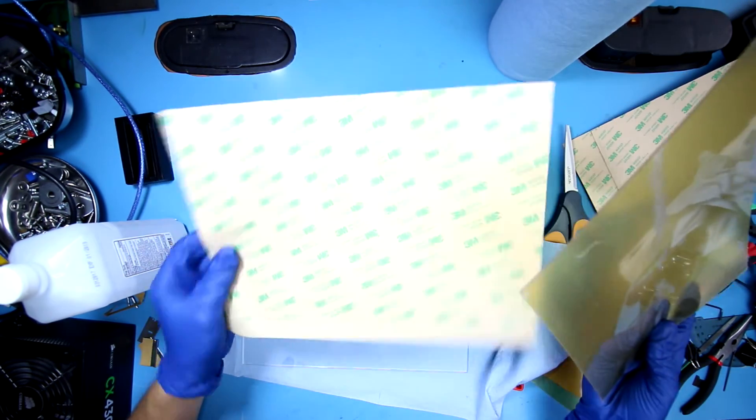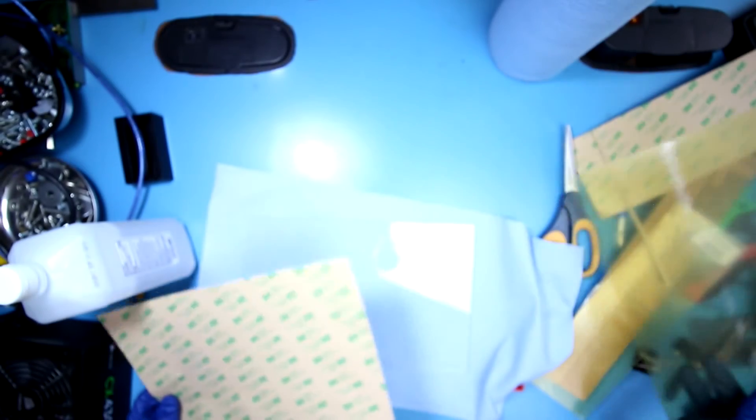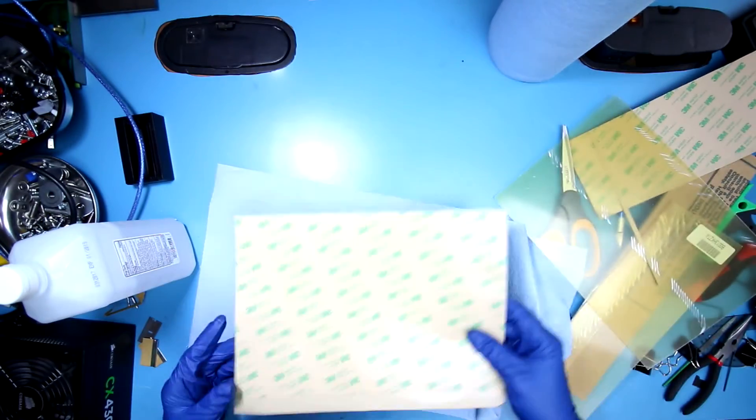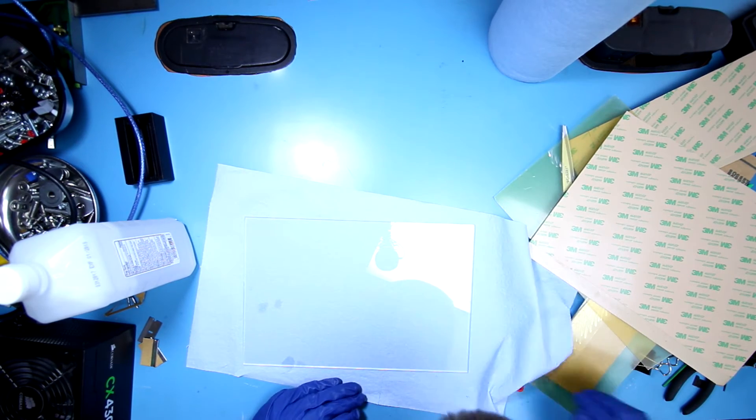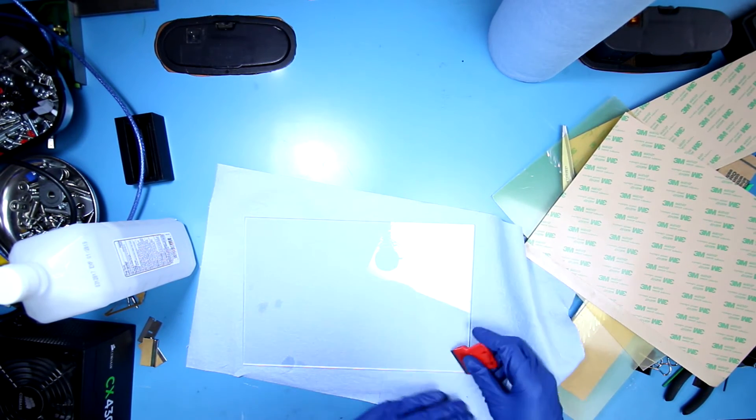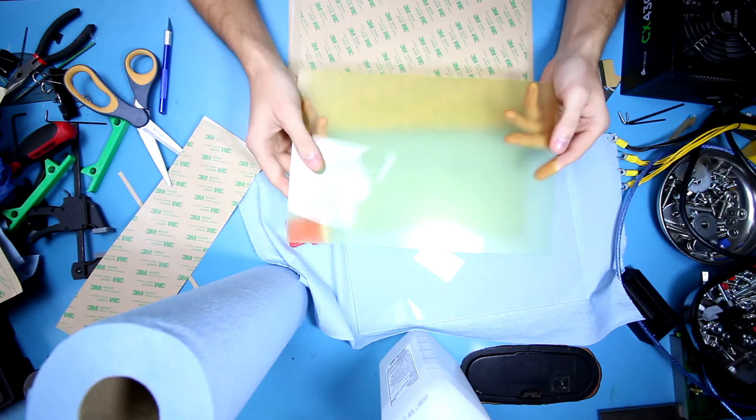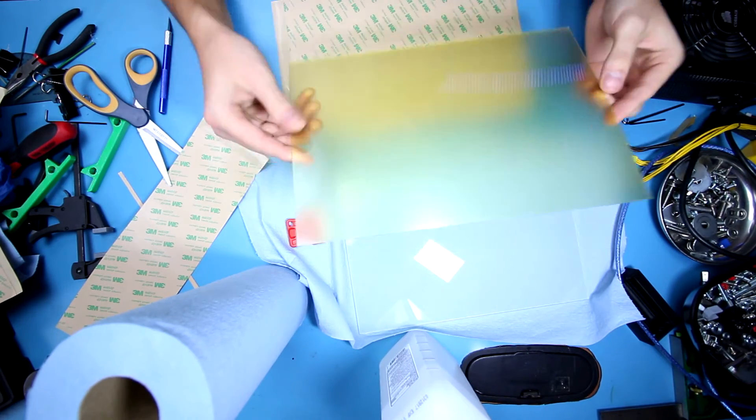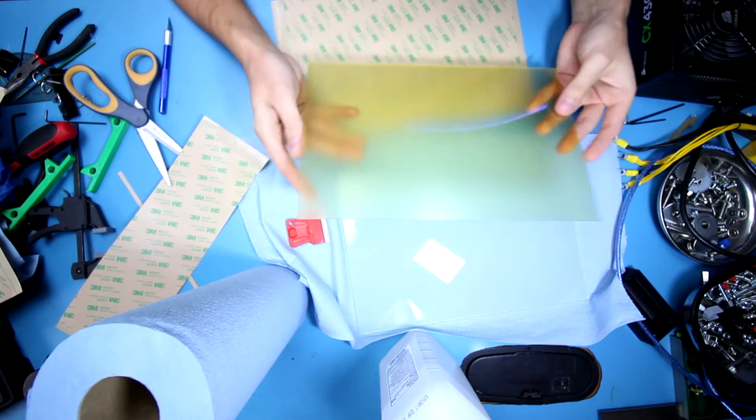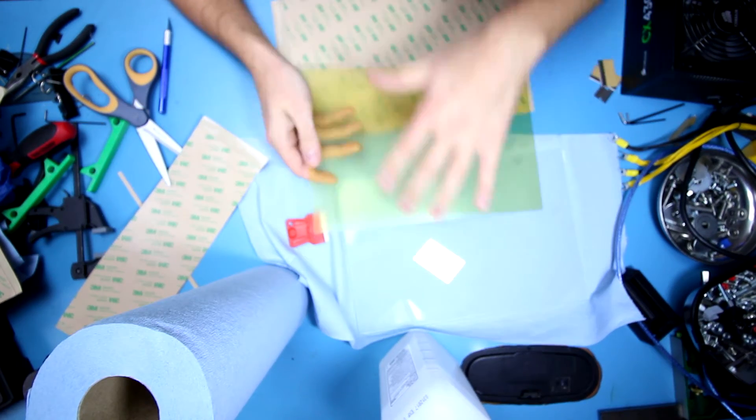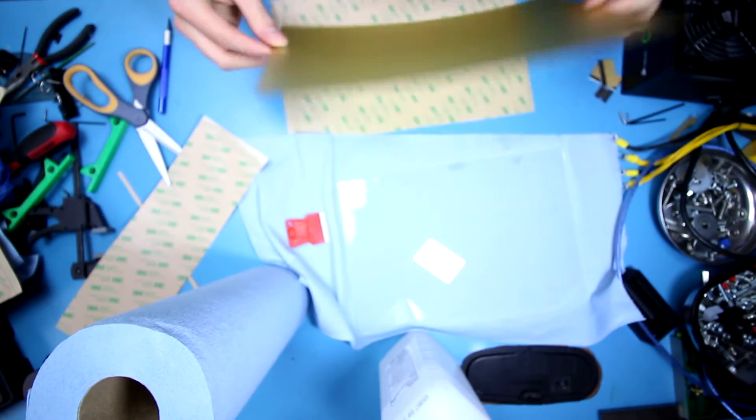Now we have our pieces cut out: our PEI piece and our 3M 468 MP sheet. I'm going to clean off everything one more time. I notice there's some more adhesive residue here. Now I went ahead and removed the protective film off of this.